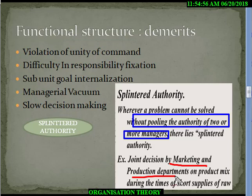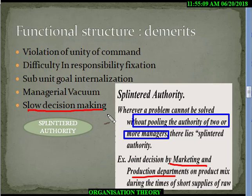Both departments need to work together, approve, and agree on the same thing before doing work. This is what splintered authority means, and it leads to a severe problem of slow decision making.